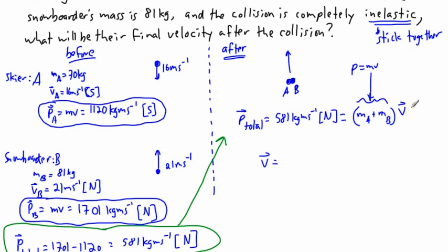Well, that's pretty easy then. If I want just the velocity, well I have that 581 equals m_a plus m_b times v. If I want v by itself, I can take 581 divided by m_a plus m_b. So actually this case, it's that easy. So if I do this, then it's going to be well, 581 divided by 81 plus 70.